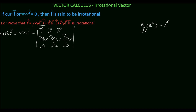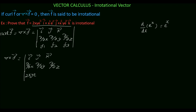Now we will check if the given function is irrotational or not. First, we have to find del cross F vector, which is the determinant with i, j, k in the first row; dou by dou x, dou by dou y, dou by dou z in the second row. F1 is the coefficient of i vector, which is 2xy e power z. F2 is the coefficient of j vector, which is x squared e power z. F3 is the coefficient of k vector, which is x squared y e power z.